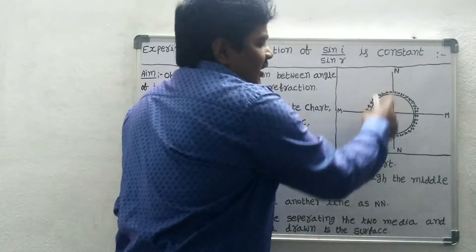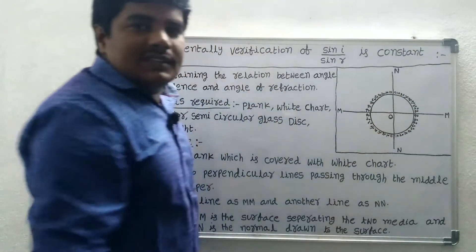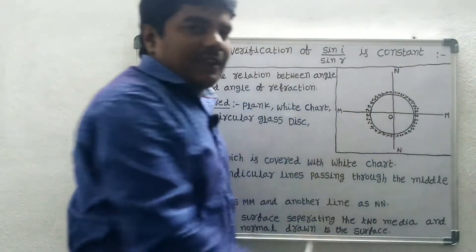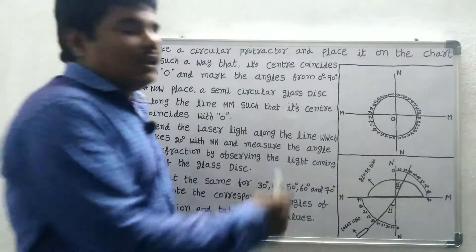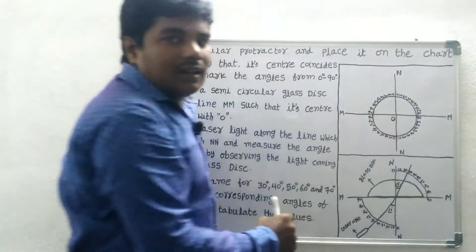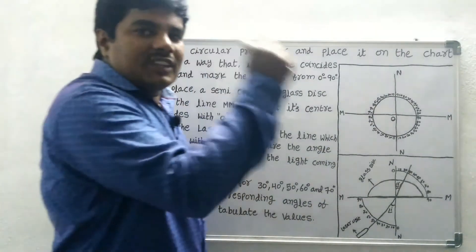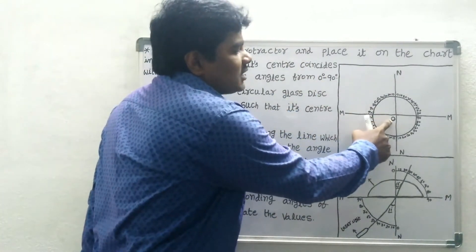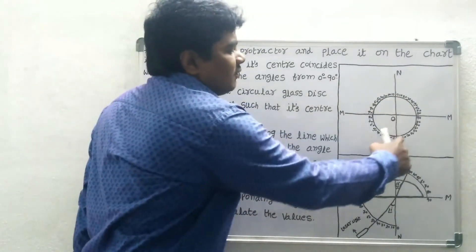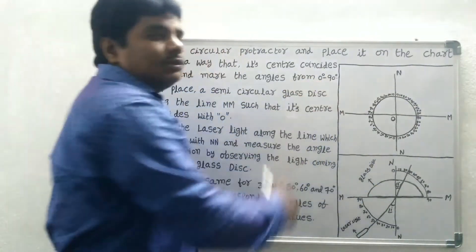Take a circular protractor and place it on the chart in such a way that its center coincides with O and mark the angles from 0 to 90 degrees.